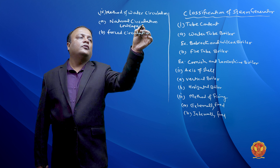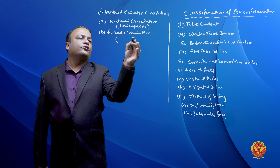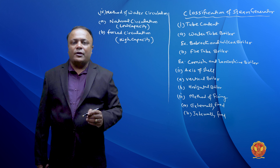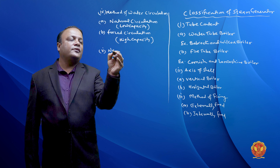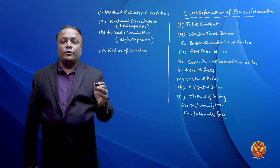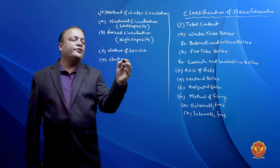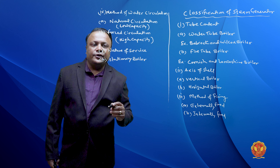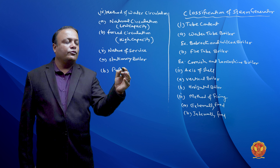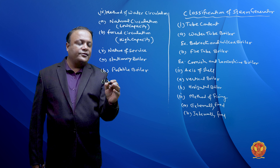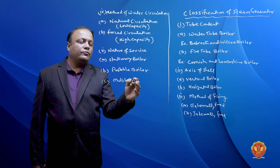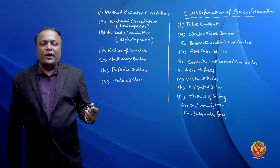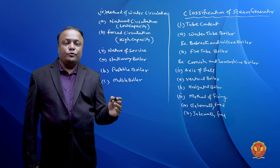The fourth classification is based on the method of water circulation inside the boiler. The first method is natural circulation, as seen in the Babcock and Wilcox type boiler, where water circulates without the help of any pump. The second is forced circulation, where a pump is used to force the water. Natural circulation is used in low-capacity boilers, while forced circulation is used in high-capacity power plants where a large quantity of steam is required.